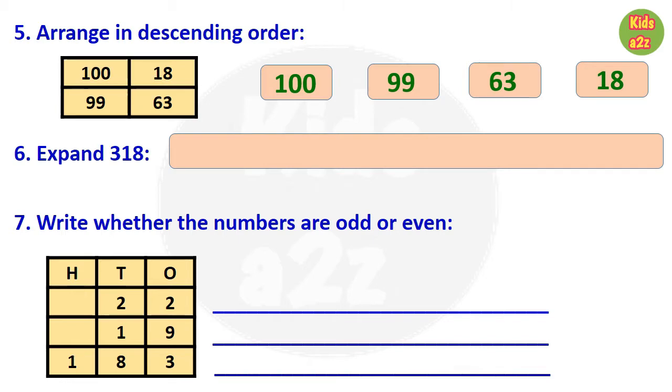Question number 6: expand 318. So the answer is 300 plus 1 tenth plus 8 ones.